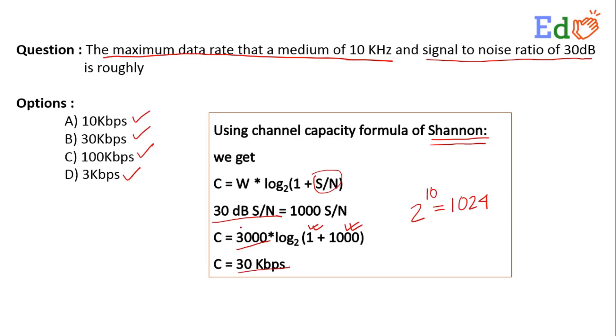So I think you have got my point. 30 dB S/N, signal to noise ratio, is equal to 1000 S/N, so it is log of 1001 to the base 2, which is coming around 9 point something. If you go for the rounding, if you take the ceiling of that, it is 10. And then 3000 into 10 it will become 30000.